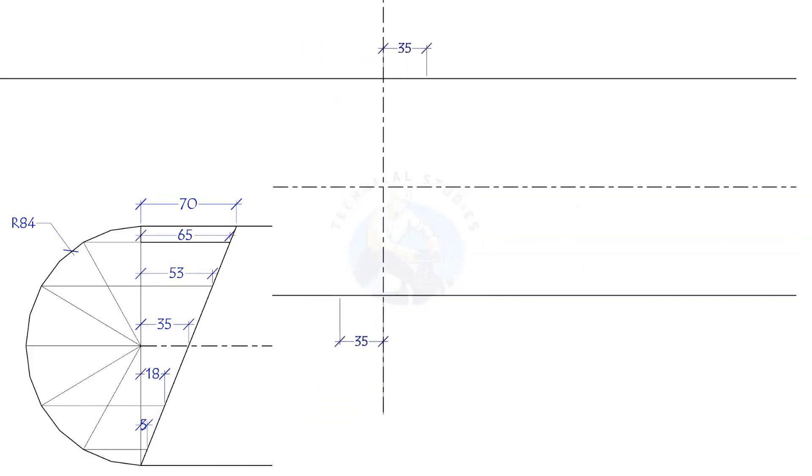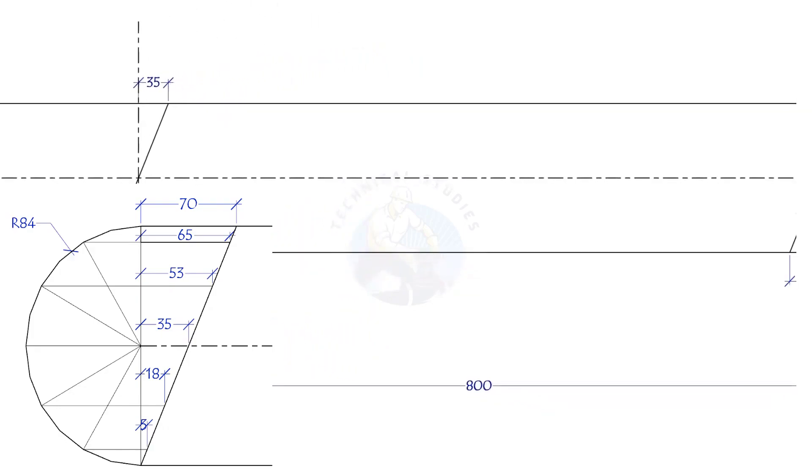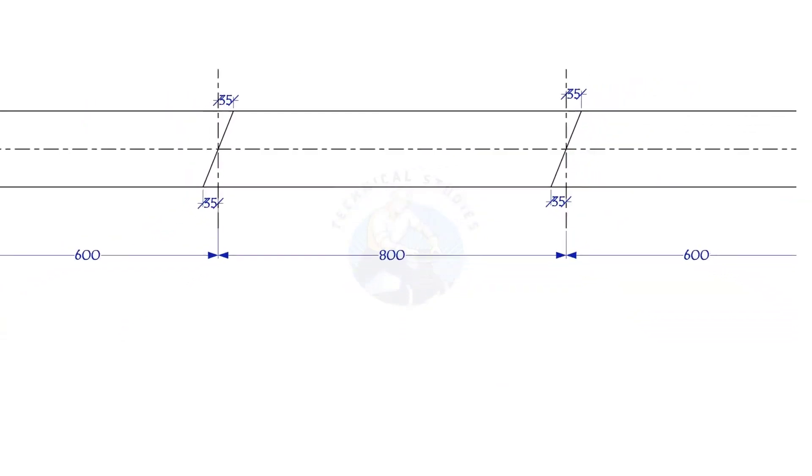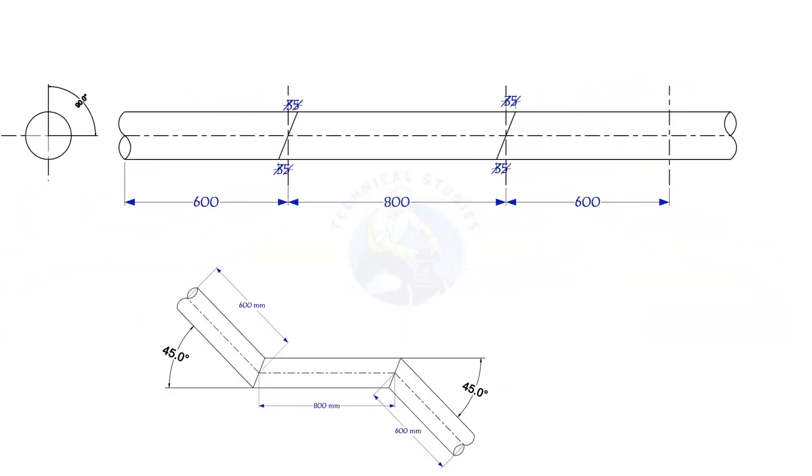Or, divide the pipe to 12 parts, draw a layout as shown, and mark. Repeat the process. The direction of the marking shall be the same. Thank you for watching.